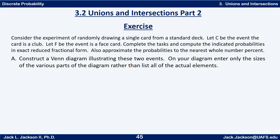This is video 3.2, continuing our lectures on unions and intersections and how they relate to probabilities. Consider the experiment of randomly drawing a single card from a standard deck. Let C be the event that the card is a club, and let F be the event that it's a face card. Complete the tasks and compute the indicated probabilities in exact reduced fractional form, and also approximate the probabilities to the nearest whole number percent.